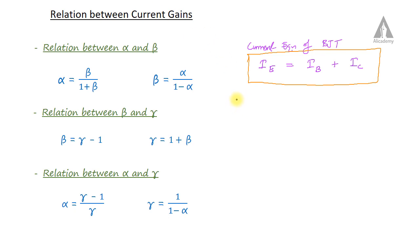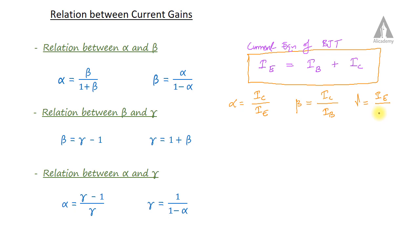We know that alpha is the current gain of common base configuration. We can write alpha is equal to IC by IE. Beta is the current gain of common emitter configuration, so emitter is common and the output terminal is IC, so beta is equal to IC by IB. And gamma is the current gain of common collector configuration, so collector is common, and gamma is equal to IE by IB.